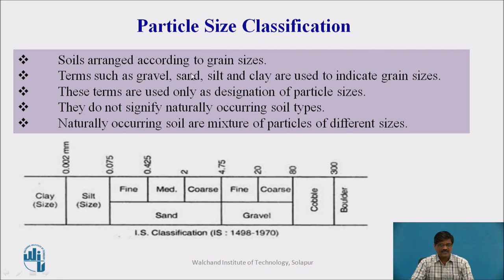Particle size classification: here, the classification is made based on the particle size of the soil particles. The soils are arranged according to their grain size. The terms such as gravel, sand, silt, and clay are used to indicate grain sizes, and these terms are used only as a designation of particle sizes. They do not signify naturally occurring soil types, and naturally occurring soils are a mixture of particles of different sizes.